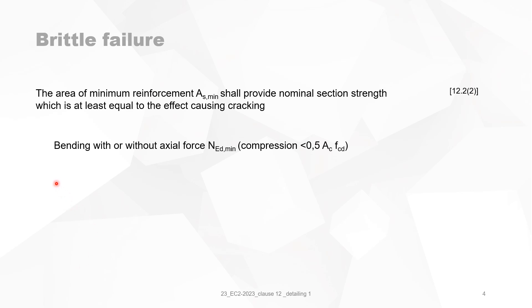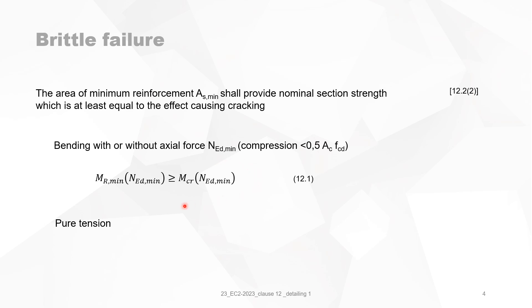For the minimum reinforcement according to clause 12, we can have the situation of bending with or without an actual force NED min, or we can have pure tension. For bending with the actual force NED min, the formulation of 12.1 states that the moment of resistance in presence of NED must be bigger than the cracking moment in presence of NED. This is the only formulation given in the code.